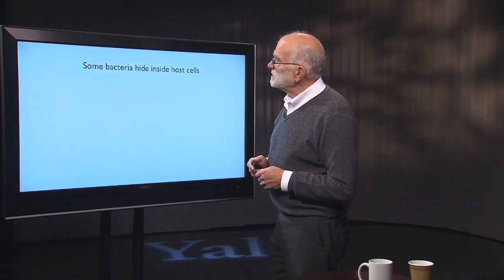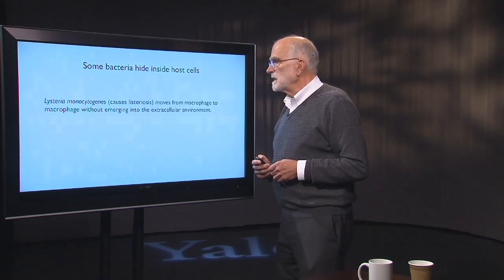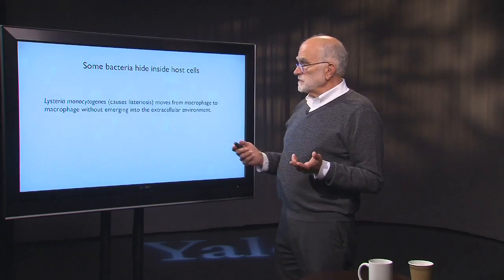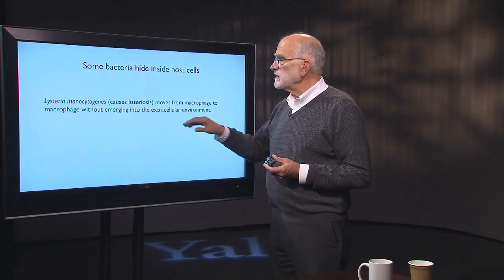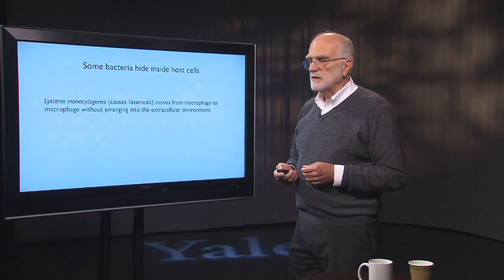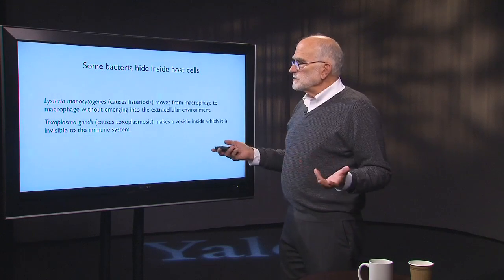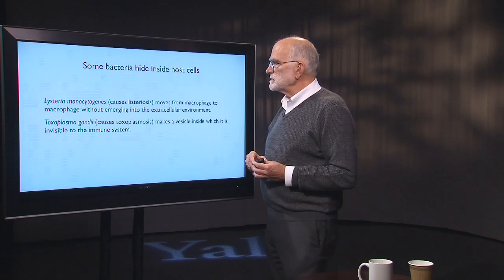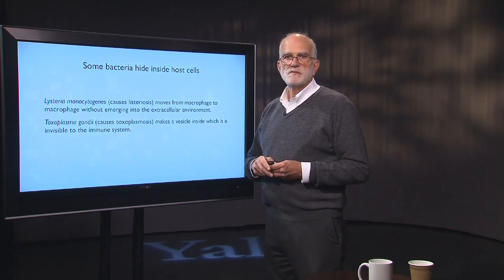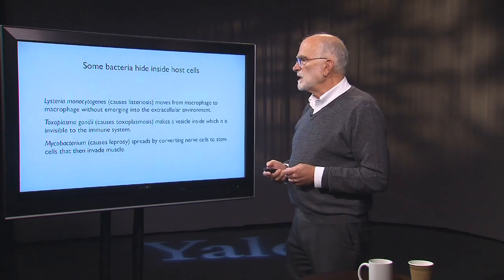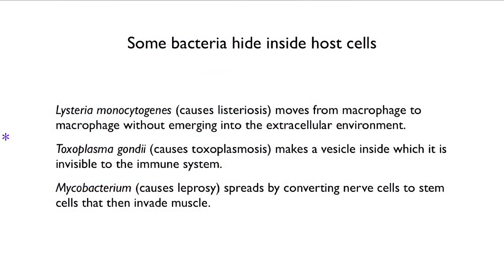Some bacteria hide inside host cells. Listeria, which causes listeriosis, can move from macrophage to macrophage without ever emerging into the extracellular environment. Toxoplasma gondii, which causes toxoplasmosis, makes a vesicle inside which it is invisible to the immune system. Mycobacterium, which causes leprosy, spreads by converting nerve cells into stem cells, and those stem cells then invade tissue — the bacterium stays inside those cells the whole time.